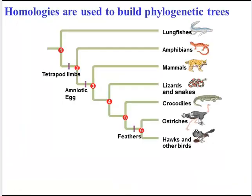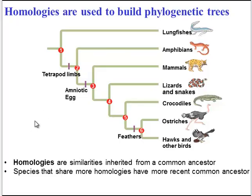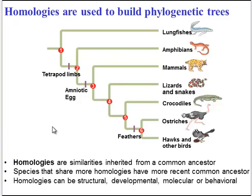Phylogenetic trees are built using evidence known as homology. Homology is simply a similarity that was inherited from a common ancestor. And the more homologies you share with another species, the more recent your common ancestor was. Homologies can be structural, developmental, molecular, or behavioral, and we'll see examples of those in a few minutes.